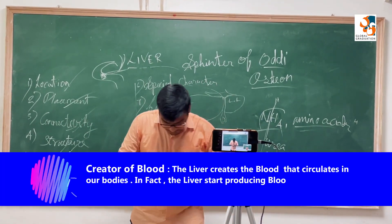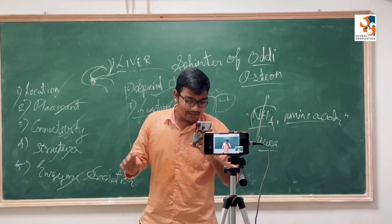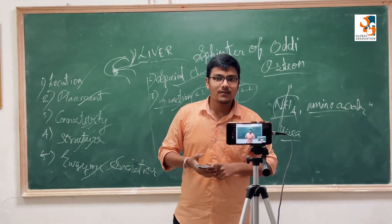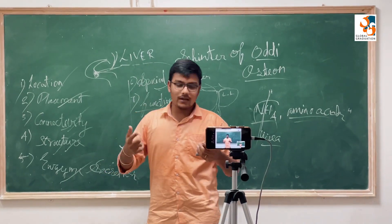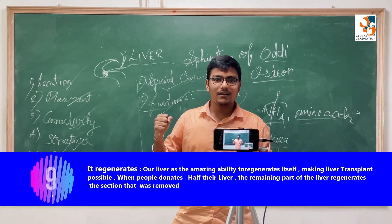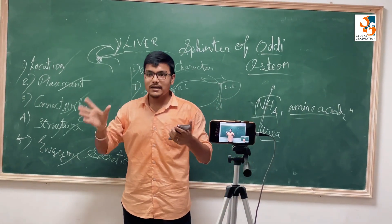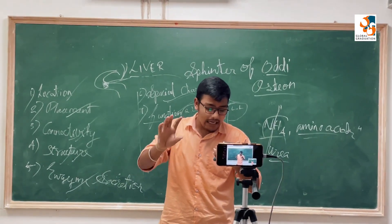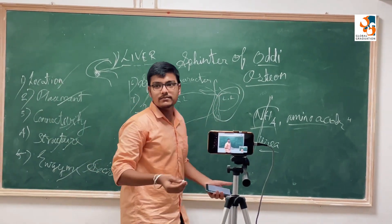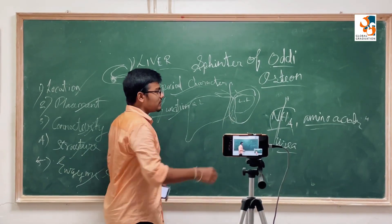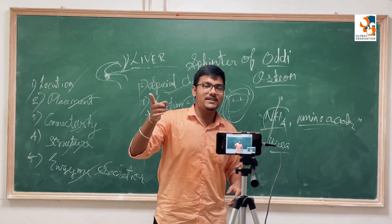The liver is also the creator of blood — it creates the blood that circulates in our body. In fact, the liver starts producing blood from the time we are born. Without the liver there would be no blood and no life. Finally, the most amazing fact: the liver has the remarkable power to regenerate itself, making liver transplant possible. When people donate part of their liver, the remaining part regenerates the section that was removed. If we transplant part of the liver to anybody, the donor's liver regenerates automatically.